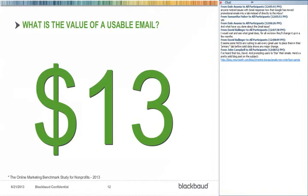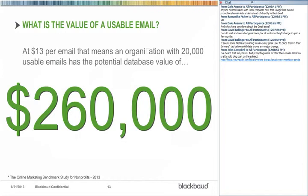In the most recent online benchmark study, the median value of a usable email is $13. This varies from organization to organization by vertical, but the average is $13 per usable email. So if an organization has 20,000 usable emails, that's a potential database value of $260,000. Not every email will generate $13, but the value within those emails should drive home the fact that you need to add as many emails as you possibly can.